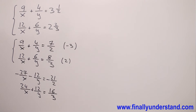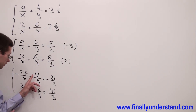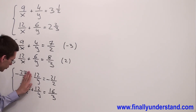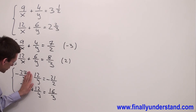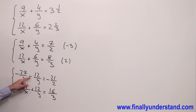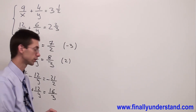Next, we're supposed to add these two equations. Why? Because we got two identical fractions: 12 over y and 12 over y. Both of them are identical, and because they have different signs, these two fractions are opposites — we can eliminate them. They're going to cancel each other out.